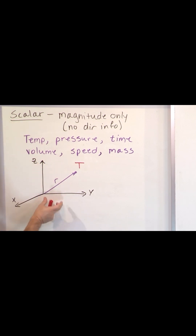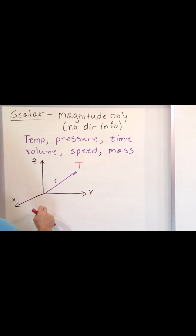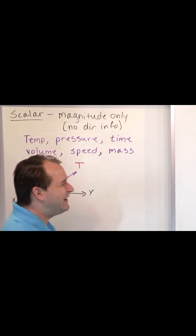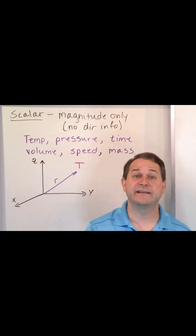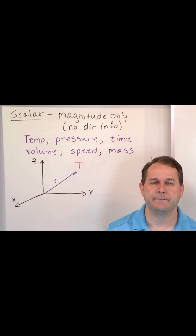I can measure here, measure here, measure here. At the tip of this arrow, no matter where I point it, it's just some number T. So it's a scalar quantity.